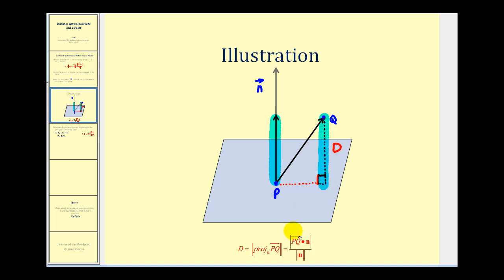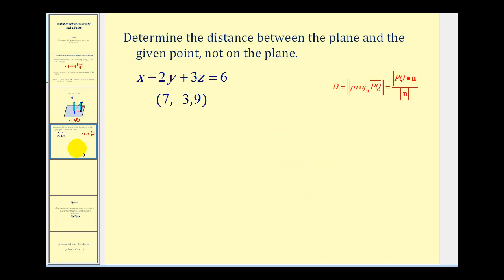Let's take a look at an example of how we can apply this formula. Here we want to determine the distance between the given plane and the point (7, -3, 9) that's not on the plane. So we need to find the component form of the normal vector, as well as the component form of vector PQ, where P is a point on the plane and Q is the given point. Let's start with the normal vector.